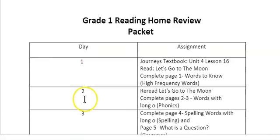Okay, so the first part of the assignment is to re-read Let's Go to the Moon. And that was from the Journeys textbook. And if you don't have the Journeys textbook, please reach out to your teacher and let them know because one should have come home for your child to complete as we do this work from home. So the directions for Day 2 were to re-read Let's Go to the Moon and complete pages 2 and 3, words with long O. And that means from this packet. So we're going to go ahead and skip down and read that.